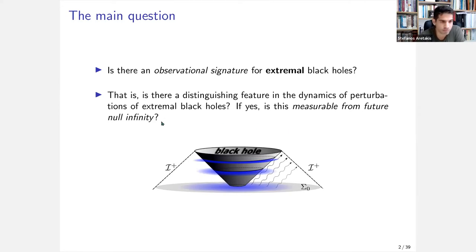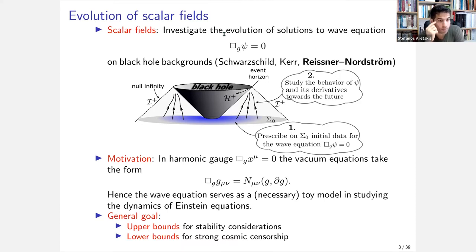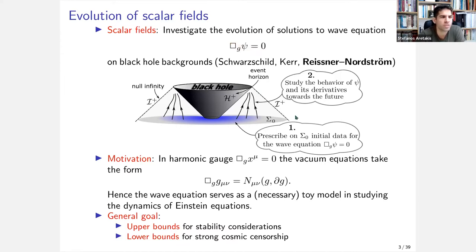The dynamics we are going to study will be the simplest possible problem: the dynamics of the scalar linear homogeneous wave equation. We're going to study this equation and see the difference between the evolution of solutions on sub-extremal backgrounds and on extremal backgrounds, and whether that difference can be observed by observers on null infinity.